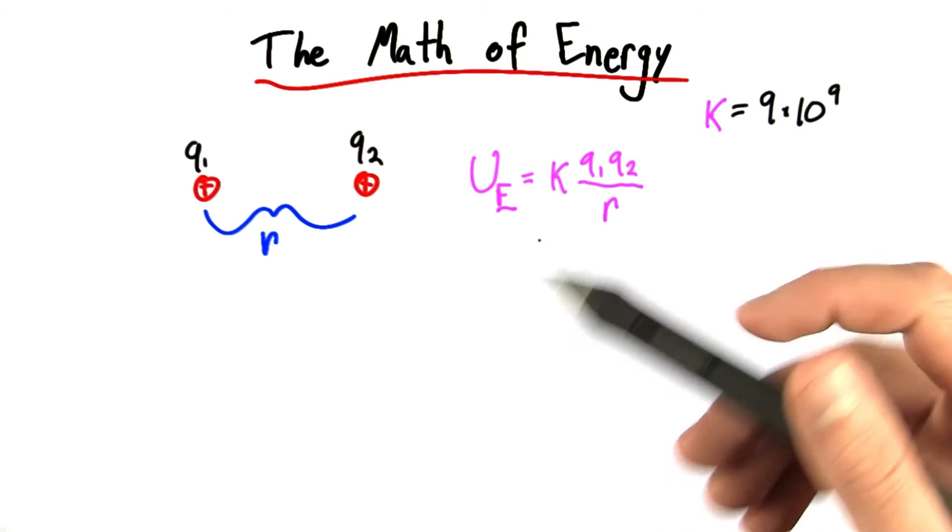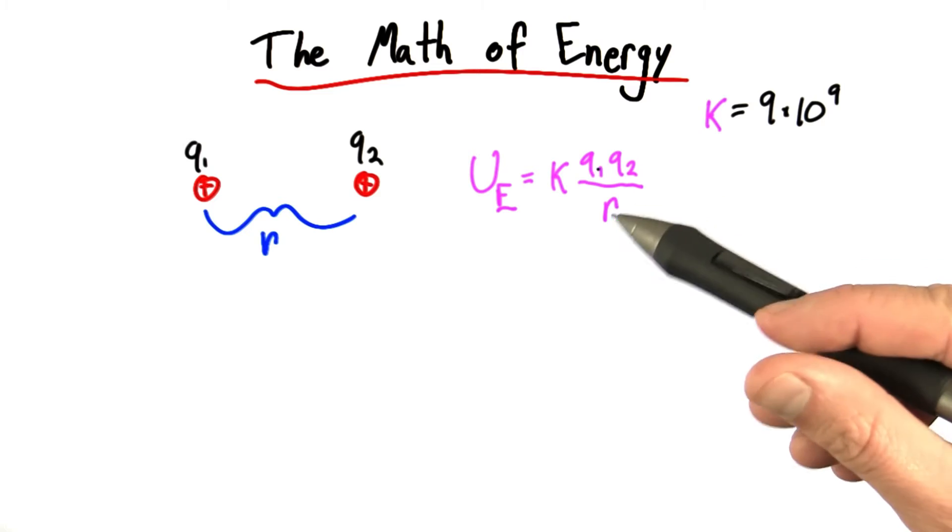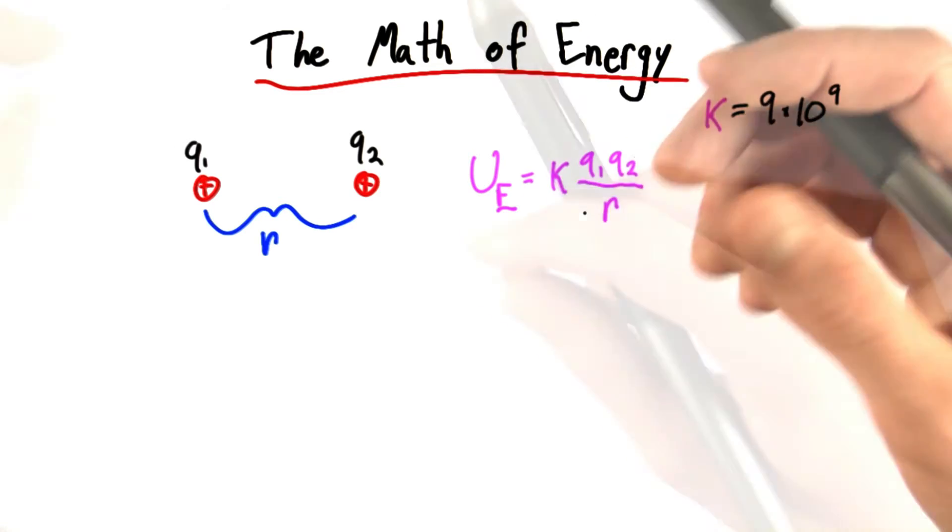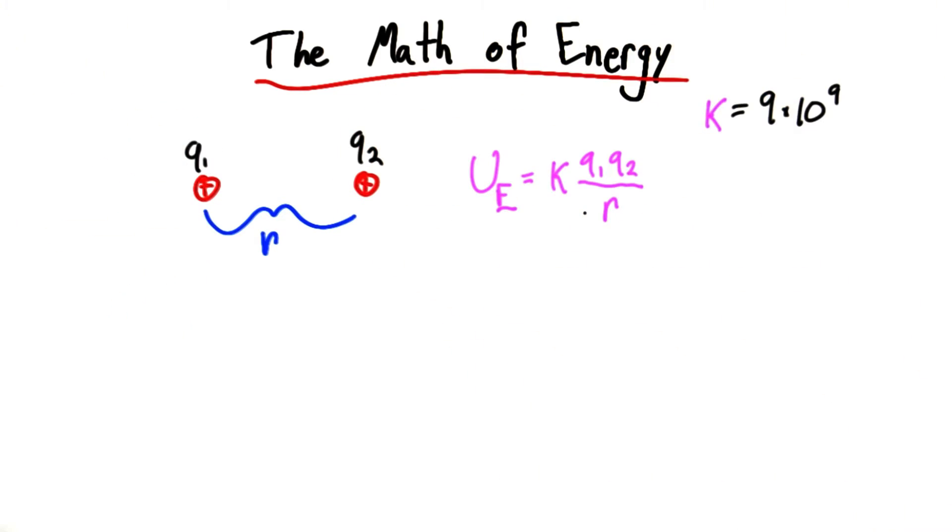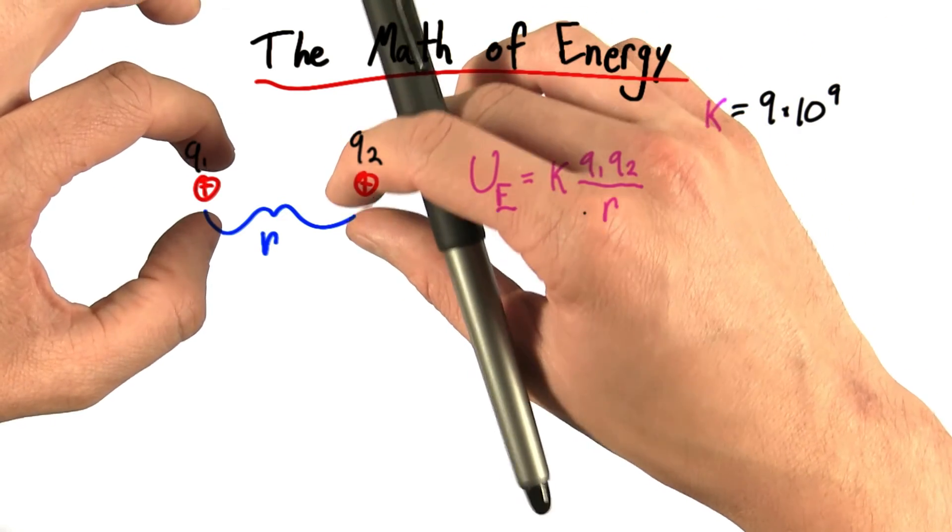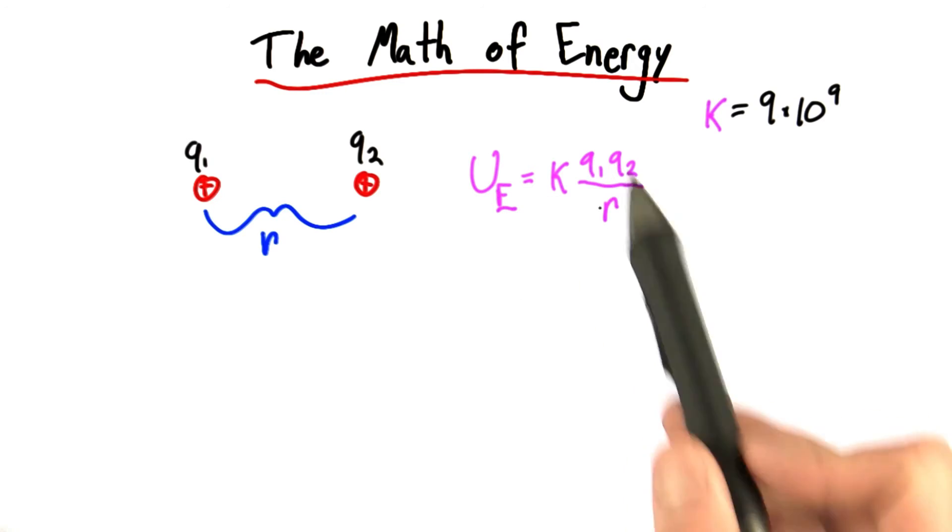The derivation for this equation is actually really fascinating, something we won't do here. But it basically comes from the idea that there's a certain amount of work required to move these charges from very far away into this configuration, and that work happens to be equal to this.